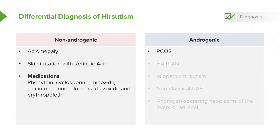There are also androgenic causes. We have a whole lecture set entitled PCOS where you can learn more. There is another phenomenon called the HAIR-AN syndrome — for more information, download the slides associated with this lecture. There is also something called idiopathic hirsutism; we really don't know why, but we think it's enzymatic activity at the level of the hair follicle.